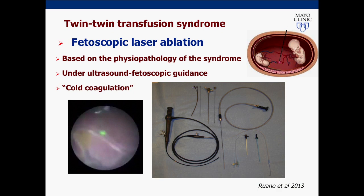Fetoscopic laser ablation is the treatment of choice for stages 2, 3, and 4 twin-to-twin transfusion syndrome. We perform this procedure under local maternal anesthesia and we introduce a very tiny telescope called a fetoscope inside the amniotic cavity of the recipient twin. Through direct visualization we identify and ablate the anastomoses using diode laser. By performing this procedure with adequate technique, nowadays we are able to increase the chance of having two live babies in approximately 70 to 80 percent.